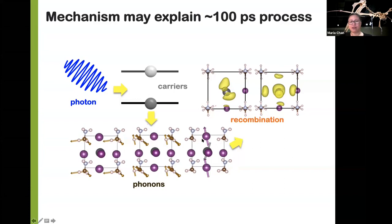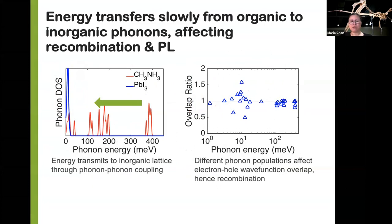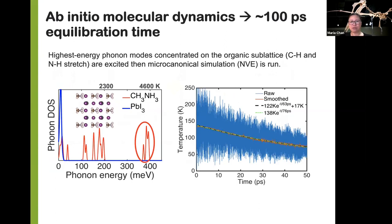The energy transfer will be quite slow because there are only a few modes that couple the two sublattices in terms of phonons. A lot of energy will be stored in the organic molecules until that energy can be funneled into the rest of the lattice. To test this, we used ab initio molecular dynamics. We excited the high energy phonon modes — physically stretched the NH and CH bonds — then calculated an NVE ab initio molecular dynamics simulation and watched the temperature change. It's adiabatic, so there's no thermostat. We watch the decay of the temperature as a function of time and find a time constant for that decay — somewhere in the range of 50 to 80 picoseconds. We think this is a reasonable explanation for what happens when you have these excitations.